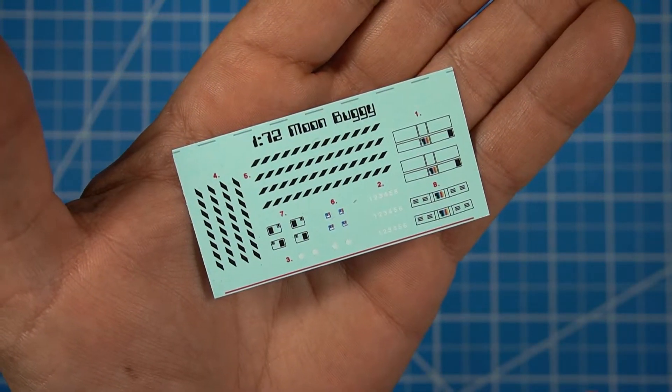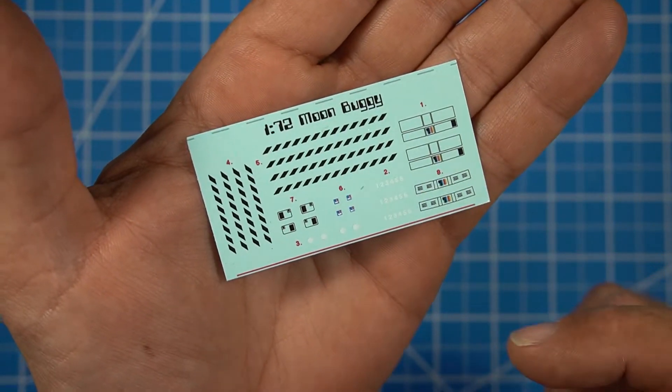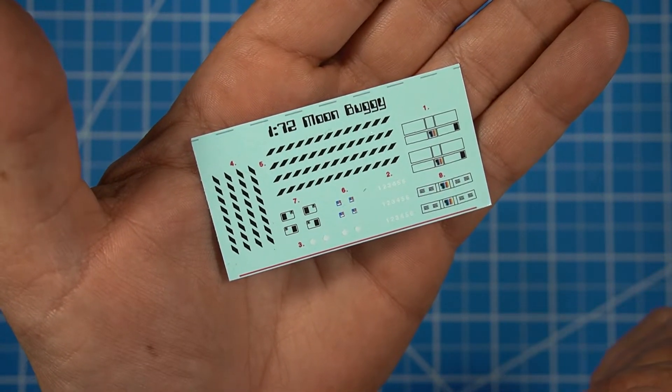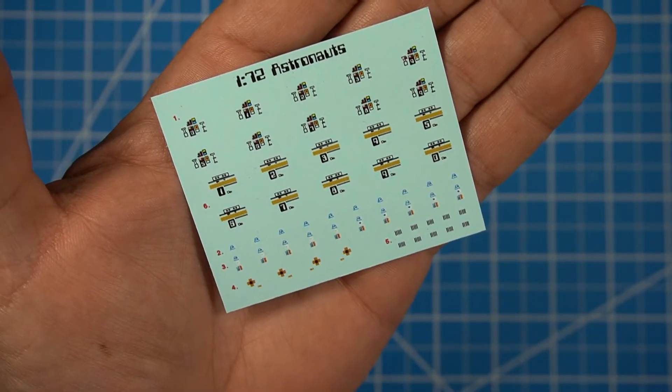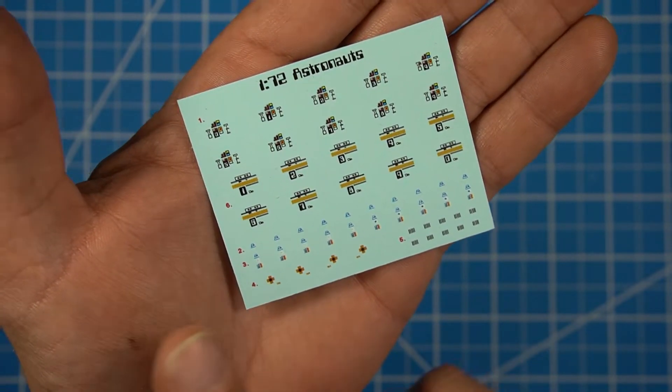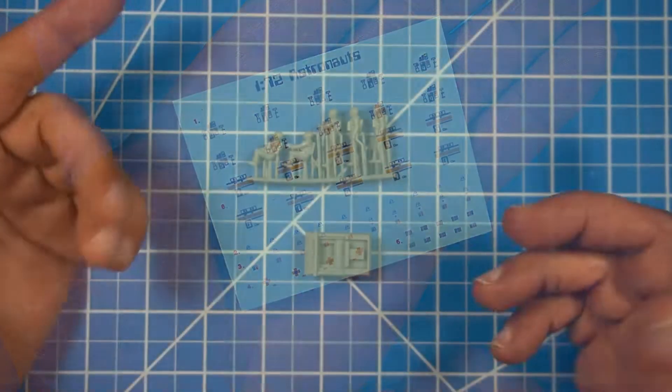These decals are the same exact thing as the 1/48 scale except shrunk down to 1/72nd scale. Except the only difference is there's two sets because you have two moon buggies. And the same goes for these decals. They're in 1/72nd, exactly the same as the last one. The thing I want to stress the most is it's a single film. And make sure you cut those really close because they are not separate on the sheet.